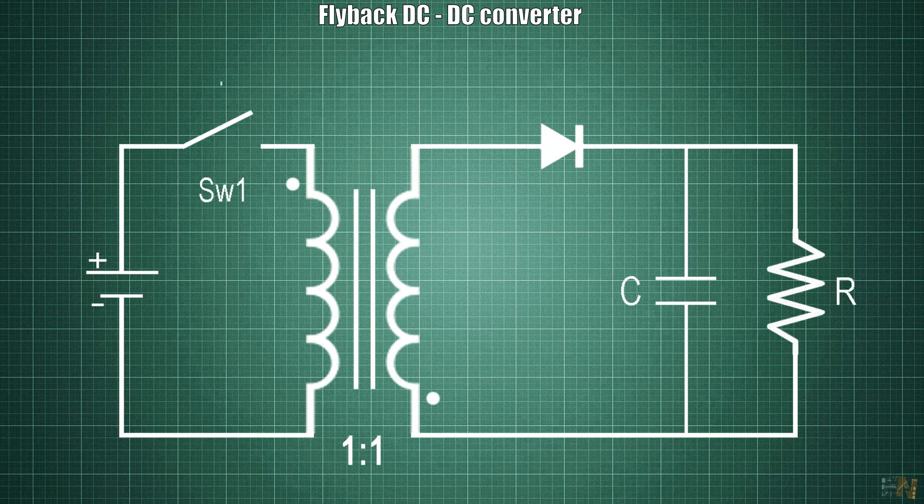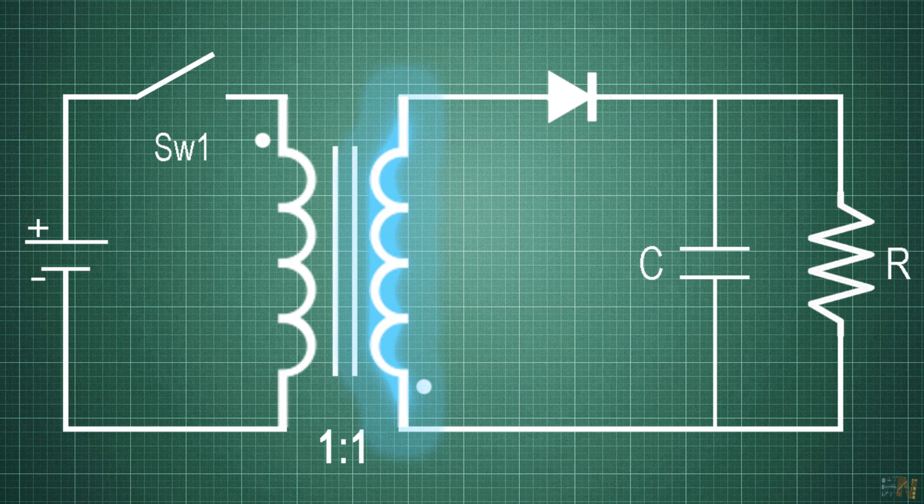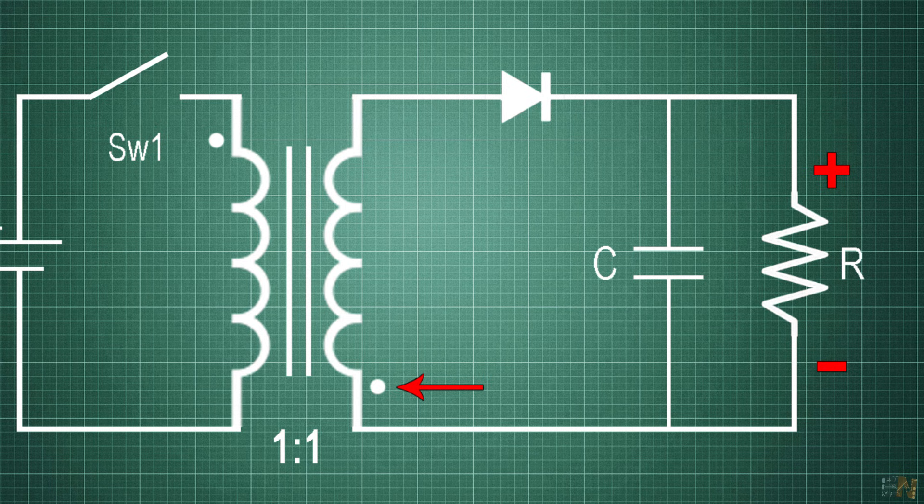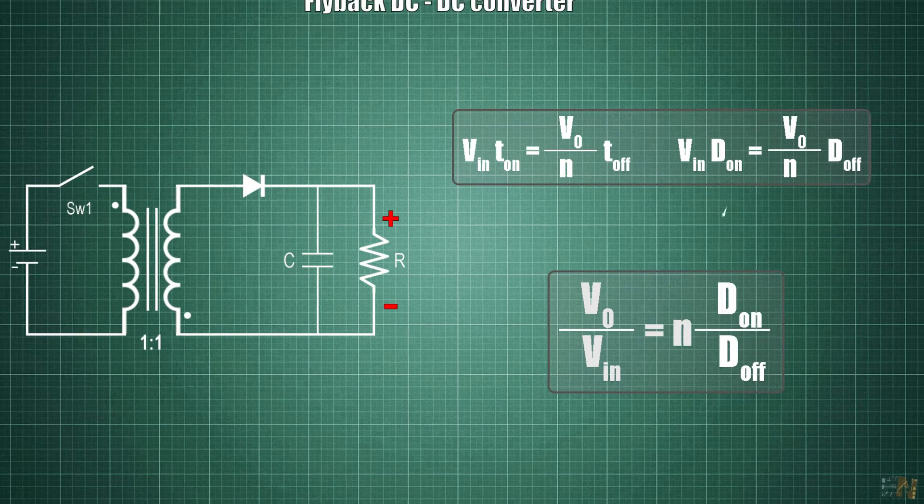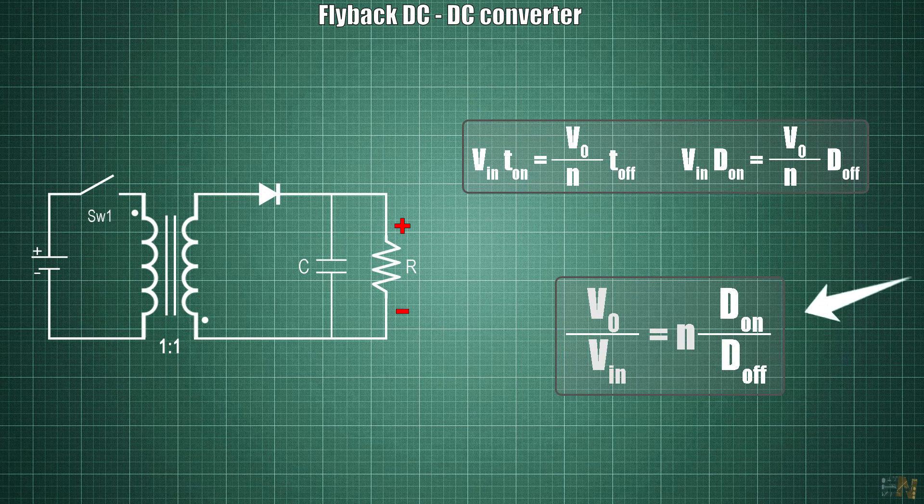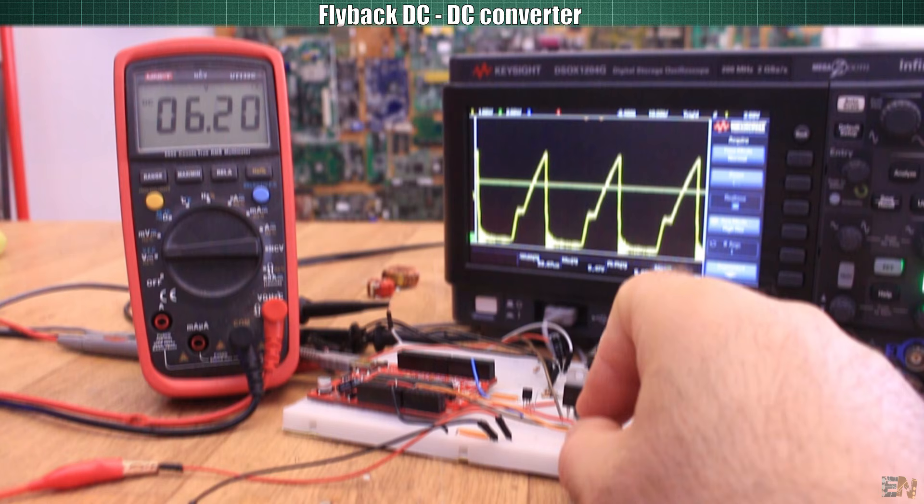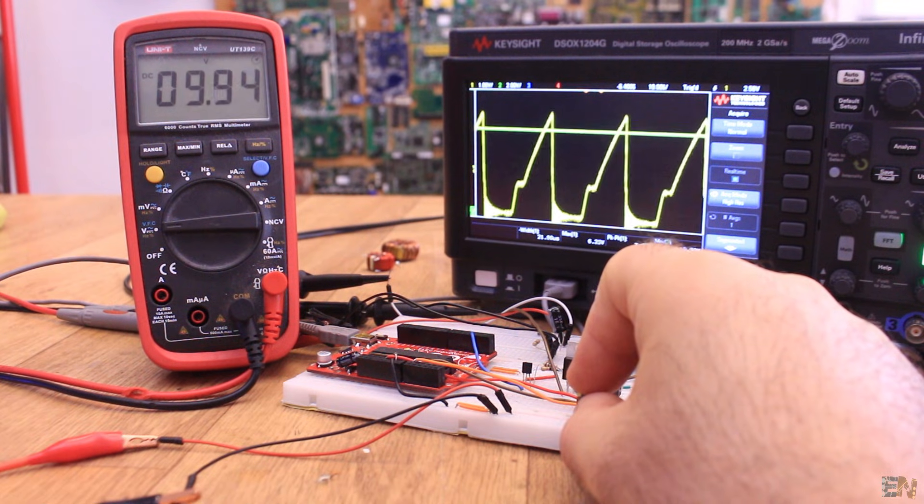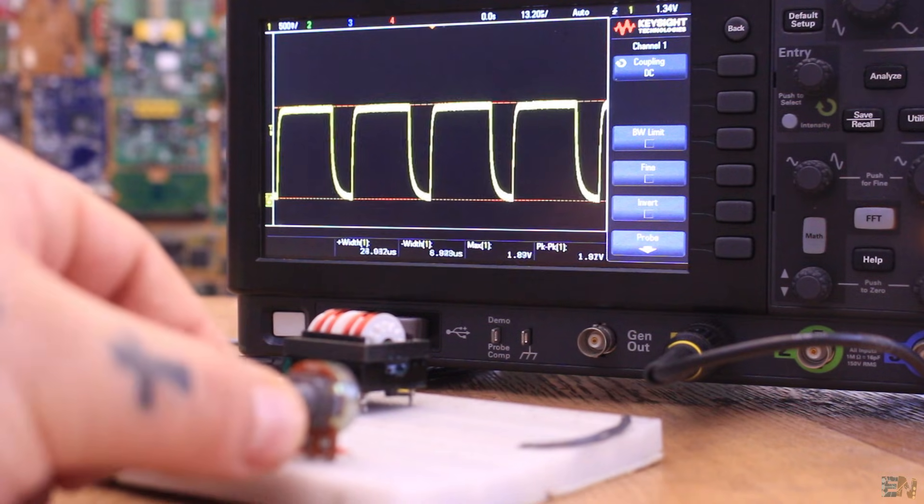We close the first switch and build up energy in the inductor core. Then we open the switch and the magnetic field will collapse and current will be induced in the secondary, creating a voltage drop at the output. The output voltage is given by this formula where N is the ratio of turns of the windings and D_on and D_off are the time periods where the switch is turned on or turned off. As you can see, the bigger the D_on, the higher will be the output.